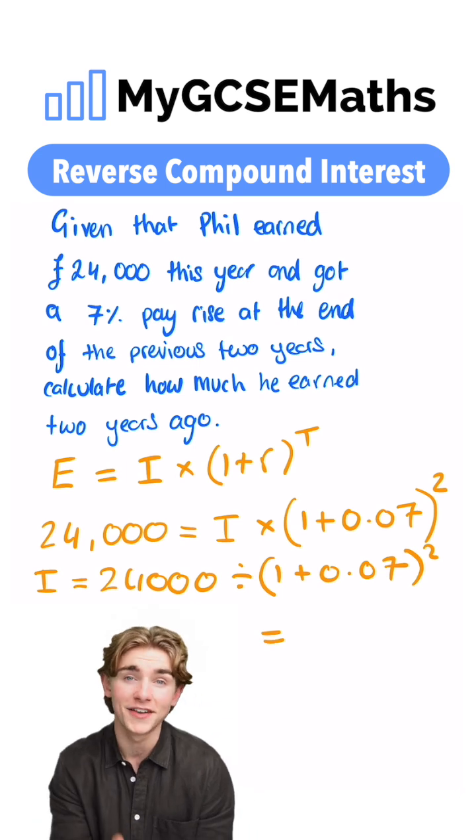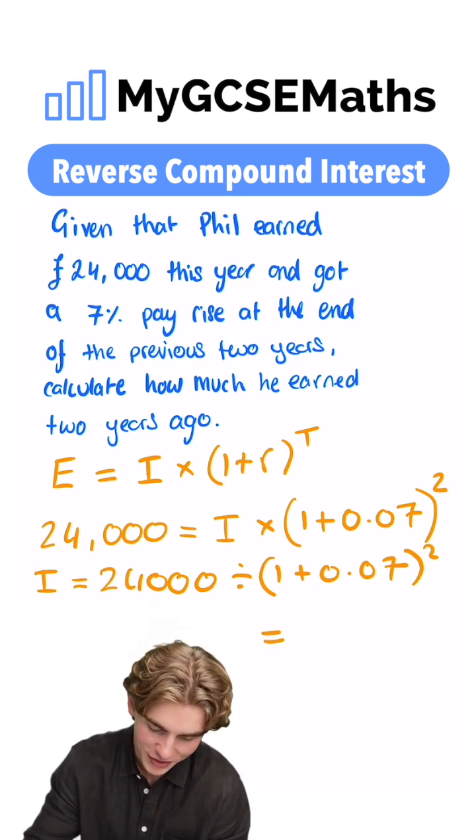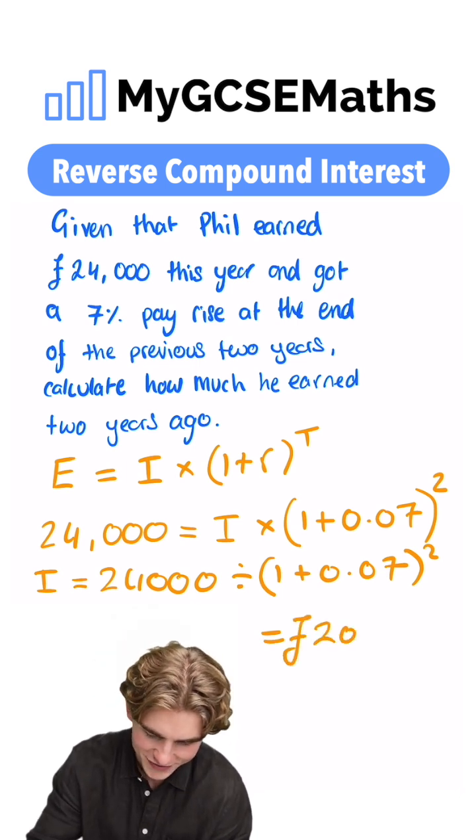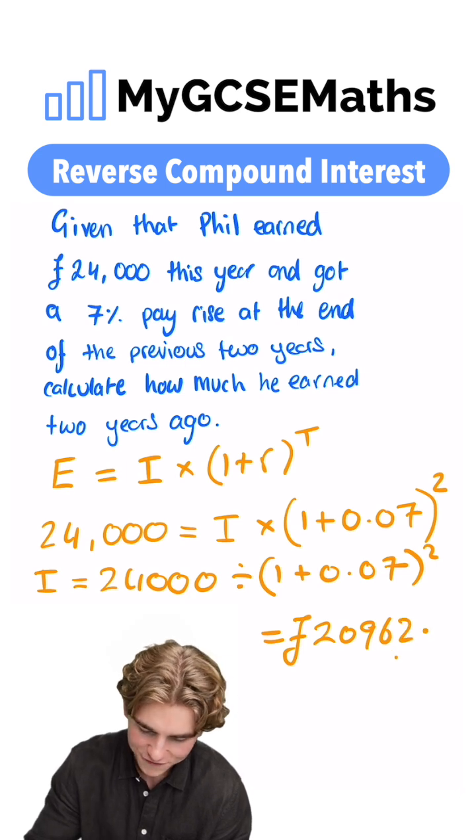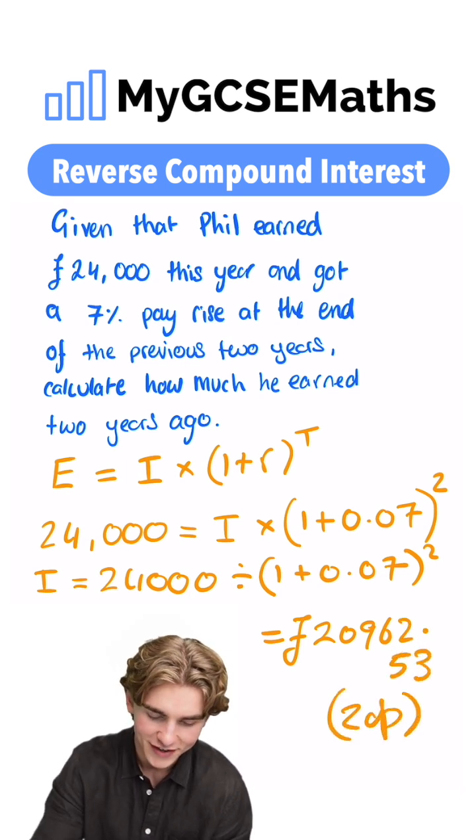which we can plug into our calculator. And when we do that, we're going to get 20,962 pounds and 53 pence, rounding that to two DP. That guys is going to be our initial amount.